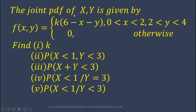The next question: the joint PDF of (x, y) is given by f(x, y) = k(6 − x − y) when 0 < x < 2 and 2 < y < 4, and f(x, y) = 0 otherwise. Find k. Find the probability for x < 1 and y < 3. Find the probability of x + y < 3. Find the probability for x < 1 given y = 3. Find the probability for x < 1 given y < 3.